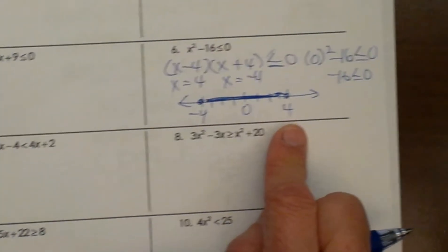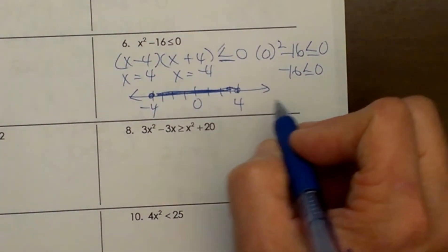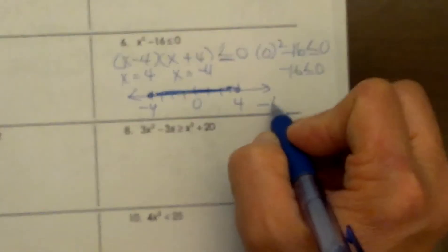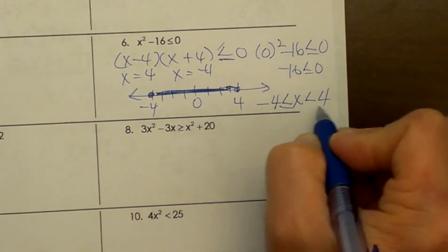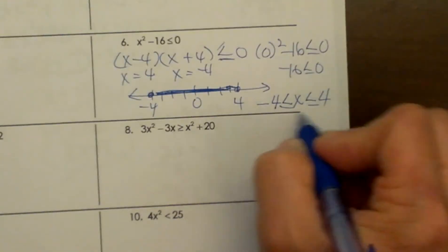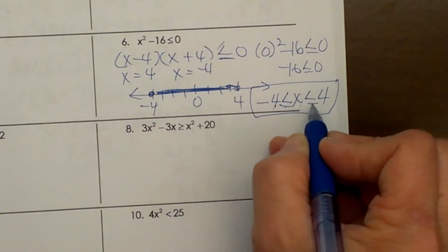Now the last thing I need to show you is just how to write your answer. These are going to be written with inequalities. So from negative 4 is less than x is less than 4 and since these are also less than or equal to I am going to add those signs. So this one is going to be written as negative 4 is less than or equal to x is less than or equal to 4.